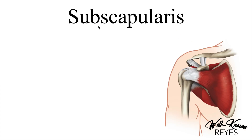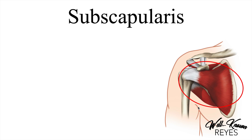Lastly, we have the subscapularis. Notice that this is the anterior view of our client, and this is the subscapularis, this muscle here. We know this is the anterior view because we can see the clavicle right here and the coracoid process — a very good indication that this is the anterior view. We can also see the client's chest, so this is the anterior aspect.